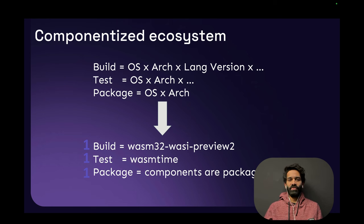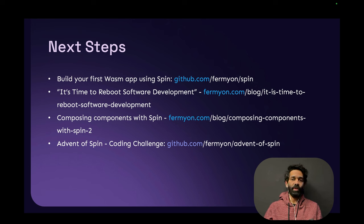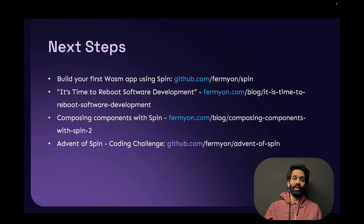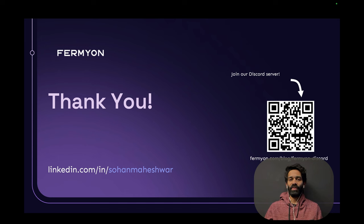I hope you're excited about this. For next steps, it's time to build your first WASM app using Spin — check out github.com/fermion/spin, it's completely open source. If you want to read more, check out the blog post 'It's Time to Reboot Software Development,' which speaks about the 2400-hour problem. For a deeper technical dive, check out the post on composing components with Spin. If you want to get started building in WebAssembly this December, there's the Advent of Spin Coding Challenge, designed to get people interested in building in WebAssembly — there are prizes as well. Hope you learned something new today — connect with me on LinkedIn, Twitter, or email. See you soon!